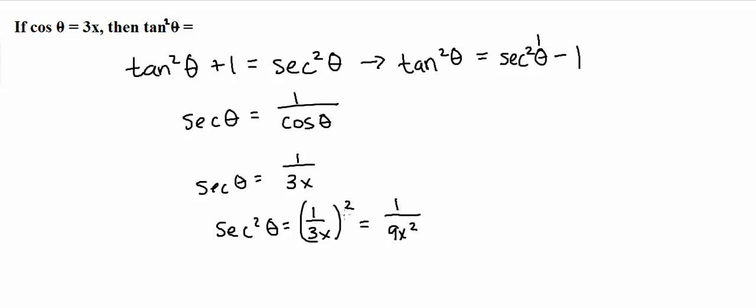Because remember, when you have a fraction and you square it, you square the numerator, and 1 squared is just 1, and then you also square the denominator. 3x squared is equal to 9x squared.